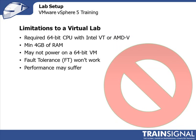When it comes to building a virtual virtualization lab, some of the limitations are: first off, you have to have a 64-bit CPU with Intel VT or AMD enabled. You'll need a lot of RAM — I would say a minimum of 4GB, but the more RAM you have the better. You may not be able to power on any 64-bit virtual machines that are running as guests underneath the ESXi servers that you're running as virtual machines in Workstation or Fusion. This is called 64-bit nested virtual machines, and today it just isn't something that's possible.